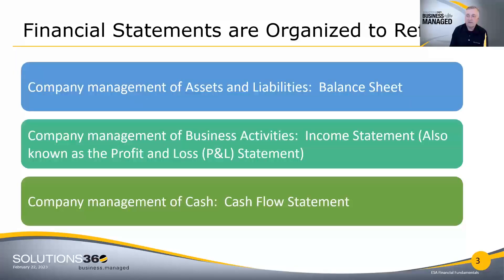We see accounting as a tool to help us run better businesses, and I hope that's the spirit you'll join with me today. I'm not a CPA, I'm not an accountant — I'm just a business person who uses accounting tools to run a better business. Let's start at the very basics. Accounting is organized into three separate financial statements. The first addresses how we manage our assets and liabilities — what do we own and what do we owe — and that's listed on the balance sheet. A balance sheet is a point-in-time listing of the things we own and the things we owe.